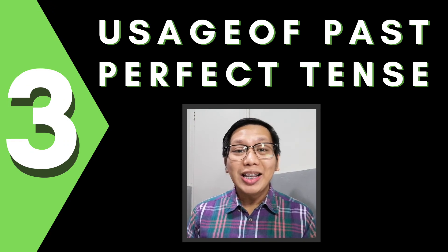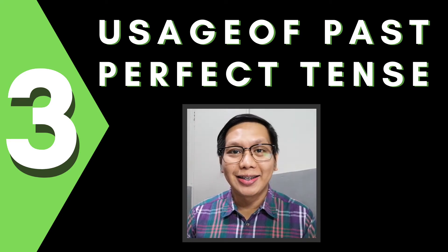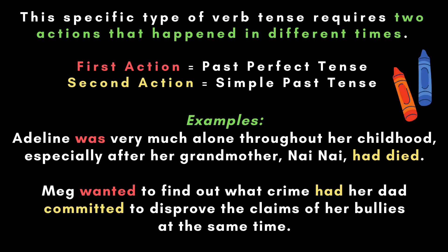The next error is a topic that we already discussed before: the usage of past perfect tense. This specific type of verb tense requires two actions that happened at different times. Use the past perfect tense form for the first action, and the simple past tense form for the second action. Observe the following example: "Meg wanted to find out what crime her dad had committed to disprove the claims of her bullies at the same time."